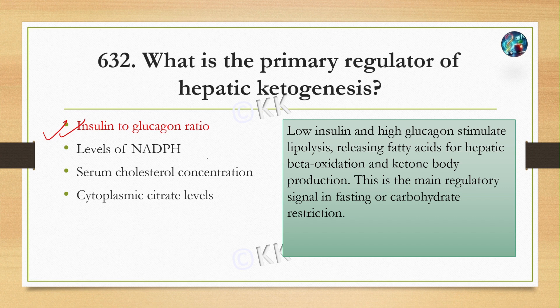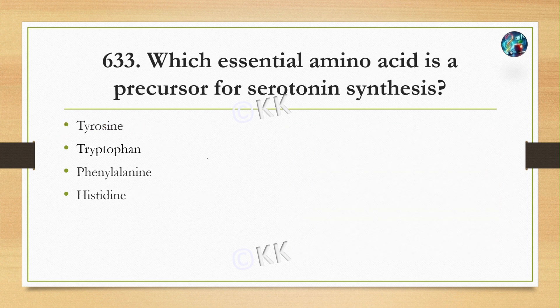Low insulin and high glucagon stimulates lipolysis and fatty acid release for hepatic beta-oxidation and ketone body production. These levels are generally seen during fasting or carbohydrate restriction.